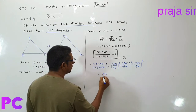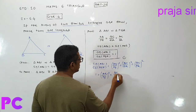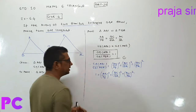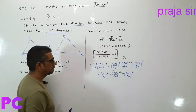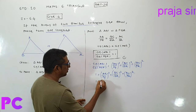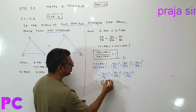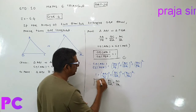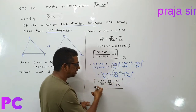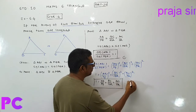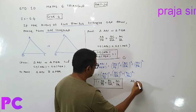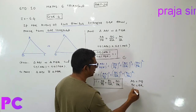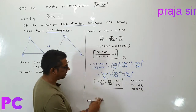So 1 is equal to AB upon PQ whole square, BC upon QR whole square, and AC upon PR whole square. If I take the square root of all of these, then 1 is equal to AB upon PQ, BC upon QR, and AC upon PR. So AB is equal to PQ, BC is equal to QR, and AC is equal to PR, because all ratios are 1.